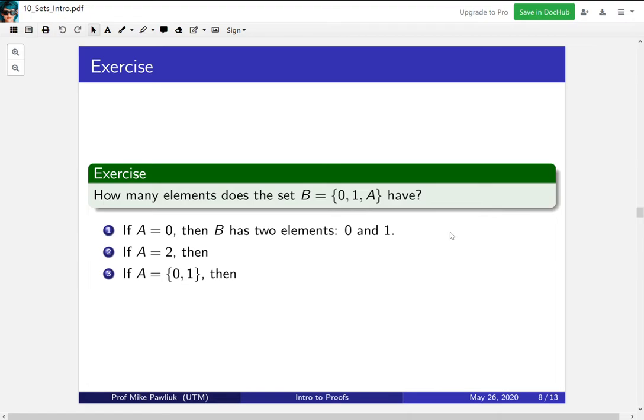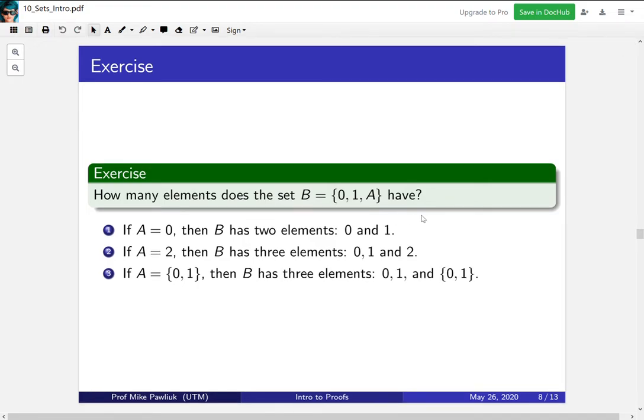How would this change if A was 2? Well here B would have 3 elements: 0, 1, and 2. Now finally the most confusing. If A was the set {0, 1}, then how many elements would B have? In this case it would have 3 things inside of it: 0, 1, and the set with 0 and 1 inside of it.